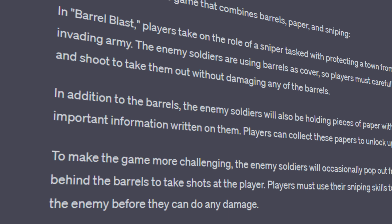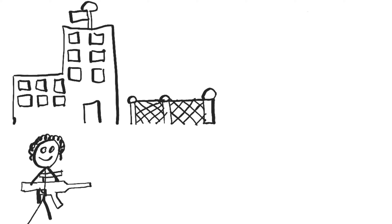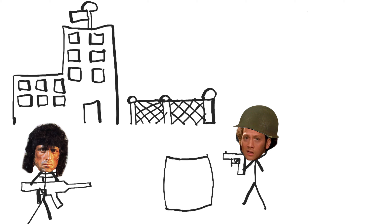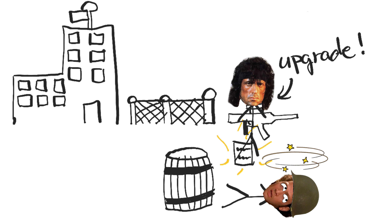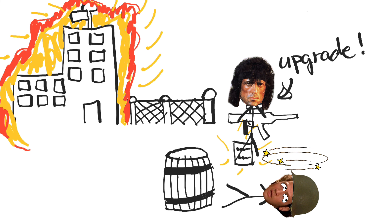Let's take a closer look at the description that ChatGPT came up with based on the three themes. In this game there is a town that the player needs to defend. The player is a sniper and as you can see he has long curly hair like every single action hero ever to exist. The player needs to defend the town against an invading army of enemy soldiers, but these soldiers are hiding behind barrels. The tricky part is that you need to kill the enemies without hitting the barrels. When an enemy is killed they drop a piece of paper with important information that you can use for upgrades. The game ends when the enemy soldiers have been defeated or when the base has been destroyed.